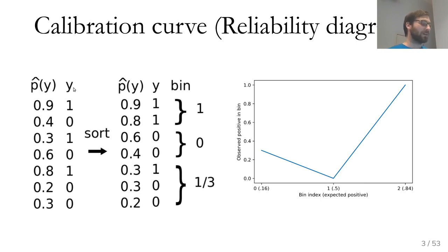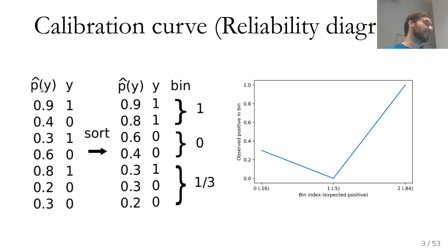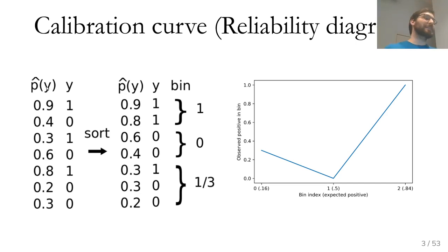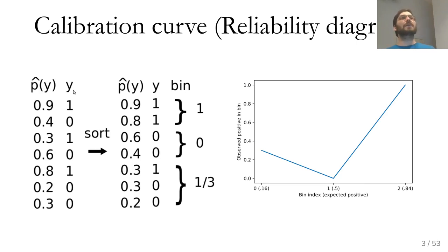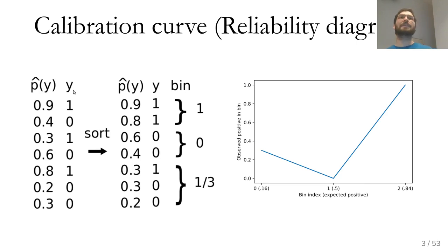Let's say we have a binary classification task and we have some estimated probability p-hat of 1 — the probability that the classifier thinks the outcome is class 1. We have some true labels on our test set, y, which are just a binary label 0 or 1. We don't have probabilistic ground truth, we only have the actual measured outcomes — you only observe 0 or 1.